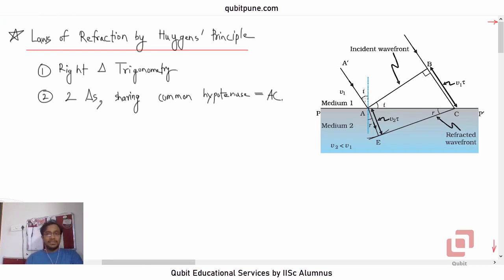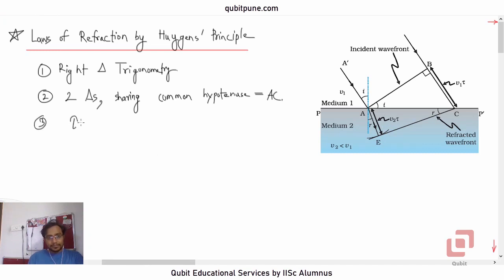By the time B reaches the interface PP', A acts as a secondary source and we consider the wavelets traveling in the refracted direction. The time is tau. After tau, B reaches C, and the distance traveled will be V1·tau.